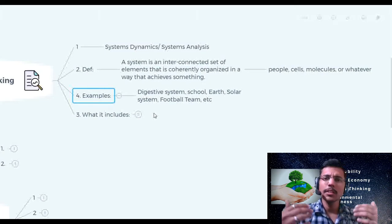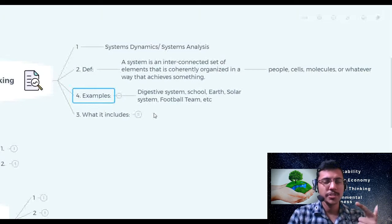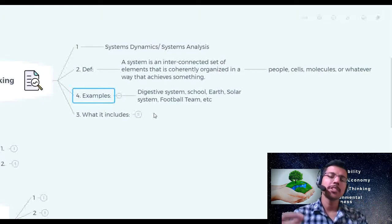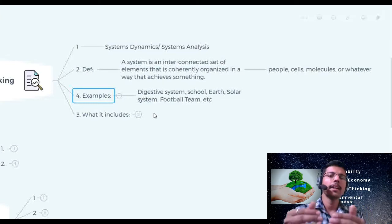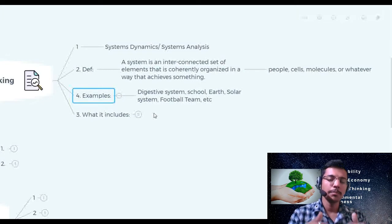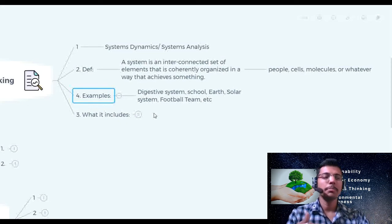We can call it as, let's say, digestive system, respiratory system, or blood circulation system, or nervous system. So these are multiple subsystems which are interconnected set of some elements and they are coherently organized and they achieve something specific. A digestive system's goal is specific and it is again made up of multiple subsystems. Again, after this we can see the school or solar system or even football team can be a system.